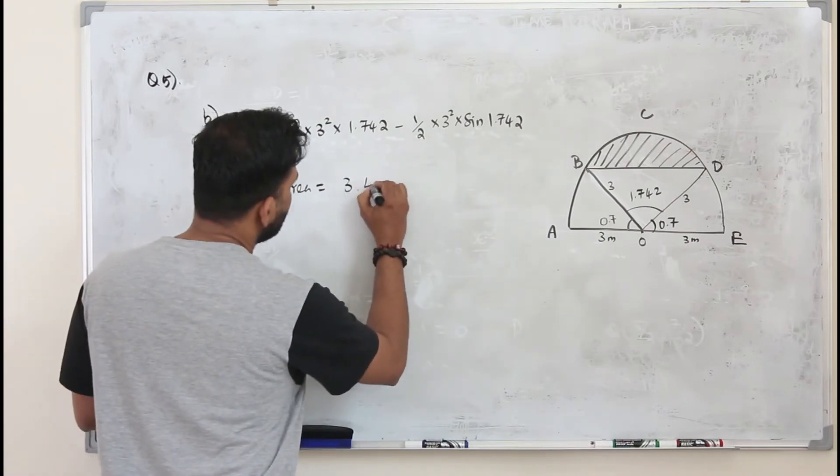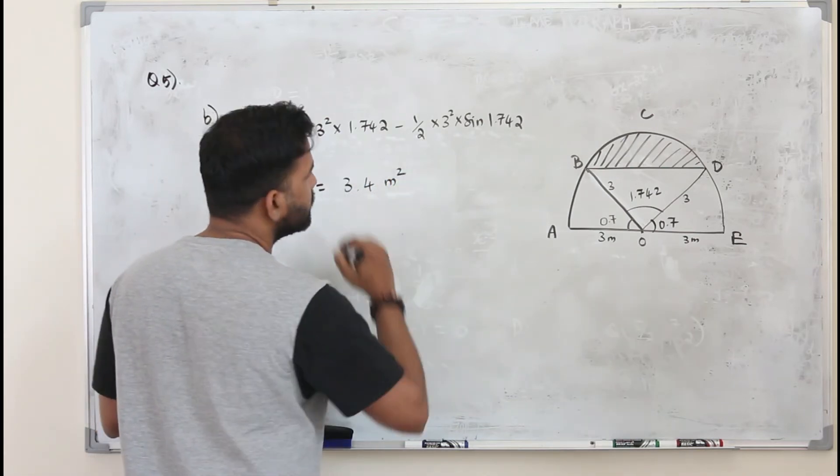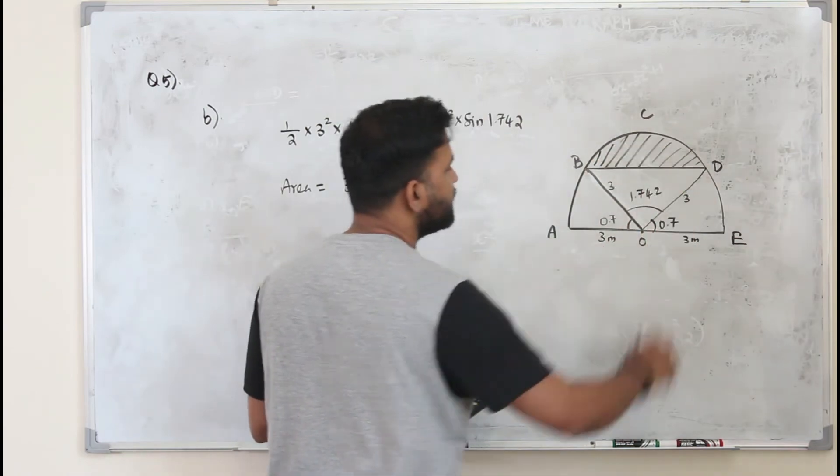So you get the area already. So it's 3.4 meter square. That's the area of this shaded region.